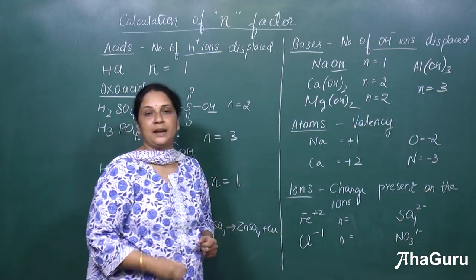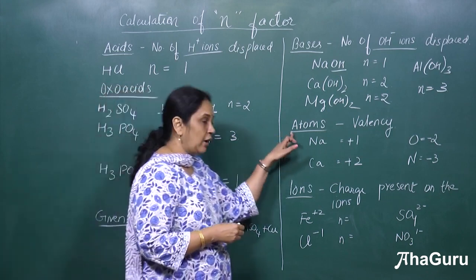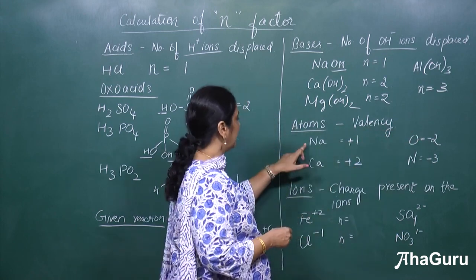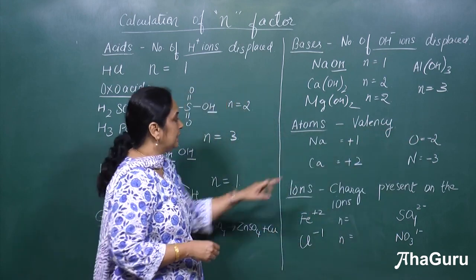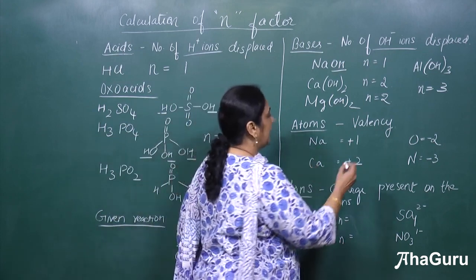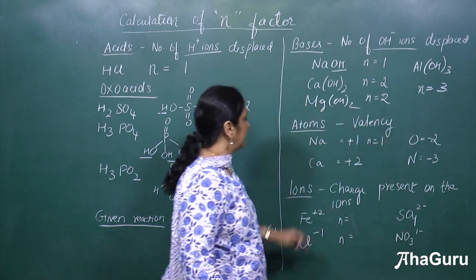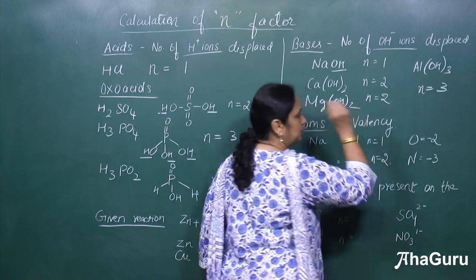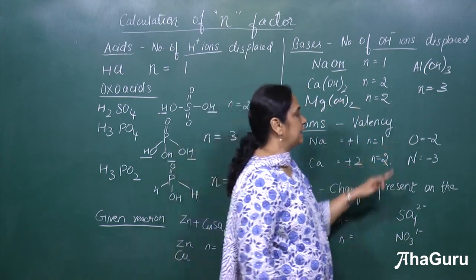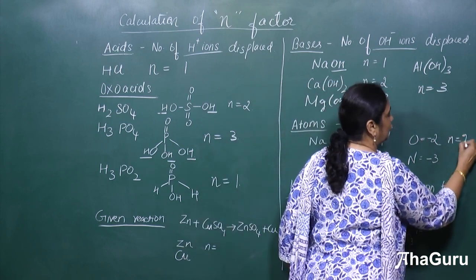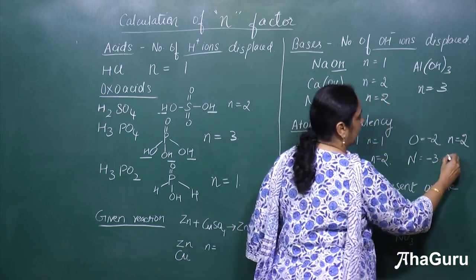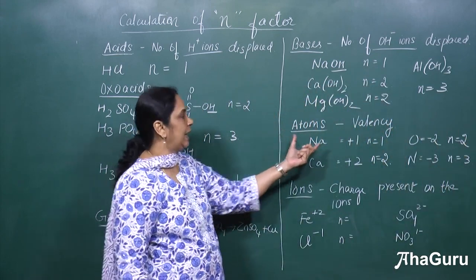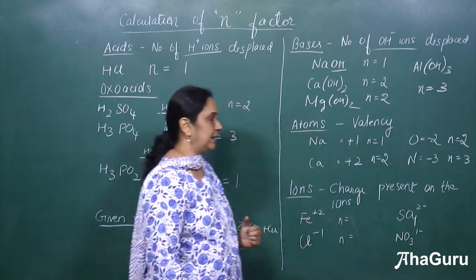Next, let us see how to calculate the N factor for atoms. For atoms, we use the valency — the valency equals the N factor. For sodium, valency is +1, so N factor is 1. For calcium, valency is +2, so N factor is 2. For oxygen with valency −2, the N factor is 2. For nitrogen with valency −3, the N factor is 3.